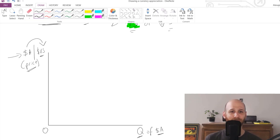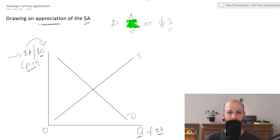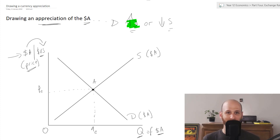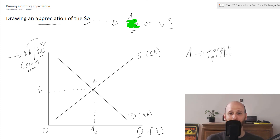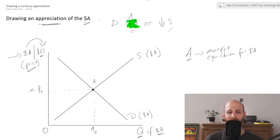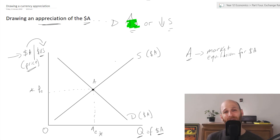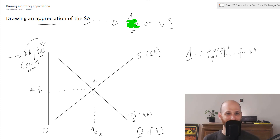We are looking at Australian dollars because we are drawing an appreciation of the Australian dollar. Here we are at our equilibrium point — Point A is the market equilibrium for the Australian dollar. Point A translates to a price or Australian dollar value shown on the price axis and a corresponding quantity. So we're going to say there is going to be an increase in demand for the Australian dollar, focusing on the movement in the demand curve.